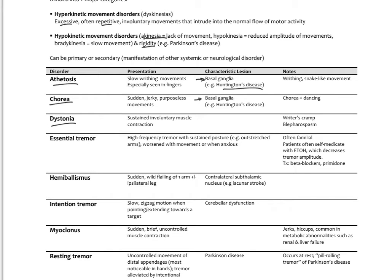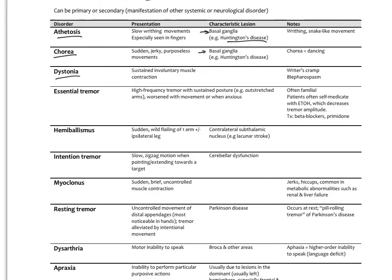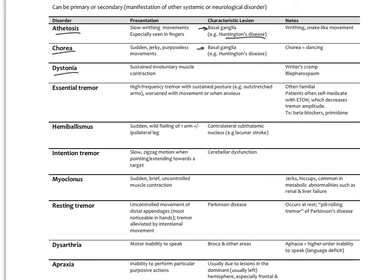Dystonia is a sustained involuntary muscle contraction, like writer's cramp or an eyelid cramp — called blepharospasm. There are many things that can cause dystonia, so it's not necessarily a sign of a basal ganglia problem.